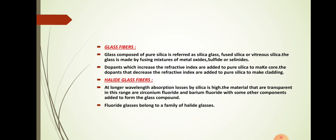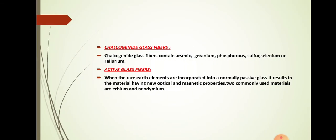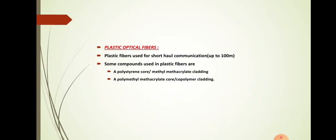For halide glass fibers, at longer wavelengths the absorption losses by silica are high. Materials transparent in this range include zirconium fluoride and barium fluoride, with other components added to form glass. Fluoride glasses belong to the family of halide glasses. Chalcogenide glass fibers contain arsenic, germanium, phosphorus, sulfur, selenium, or tellurium as dopants. For active glass fibers, rare earth elements such as erbium and neodymium are incorporated into normally passive glass, resulting in materials with new optical and magnetic properties.